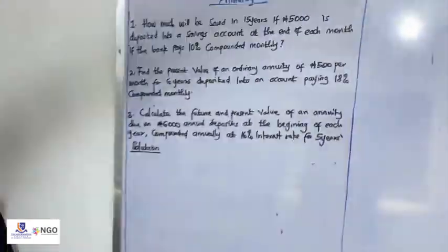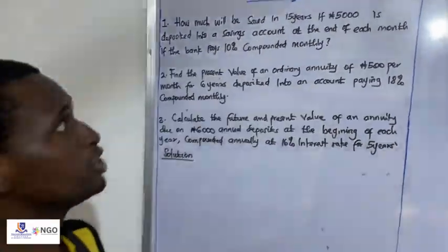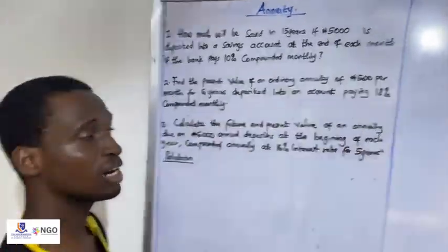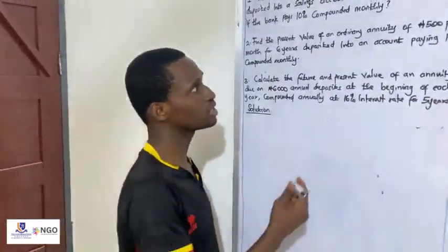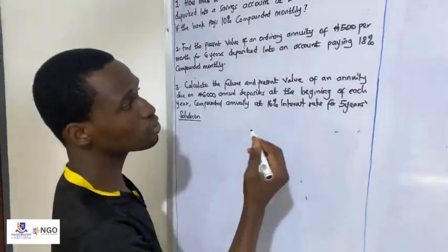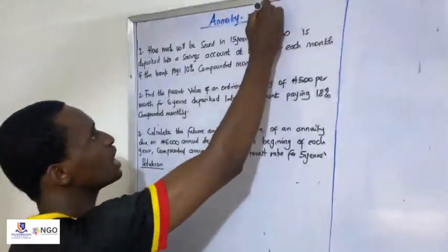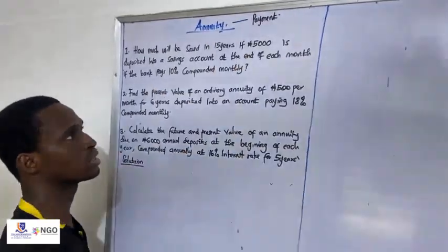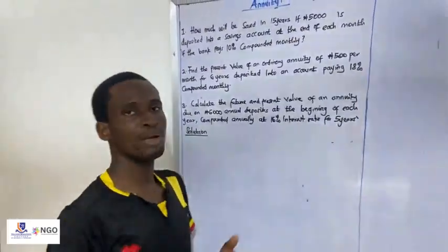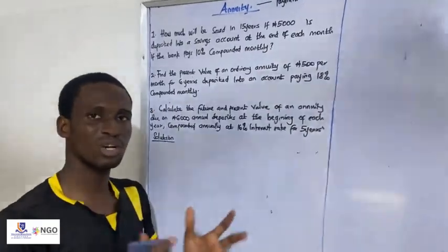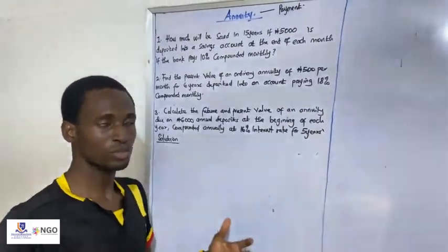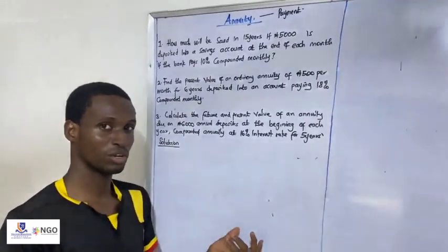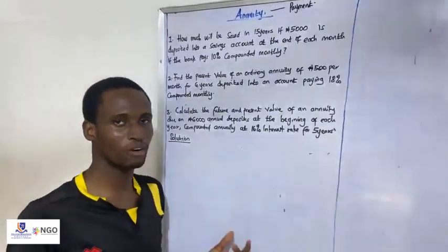Now looking at annuity. The first thing to understand is that annuity are payments — payments that are made at regular intervals. These payments can be made either at the beginning of the period or at the end of the period.